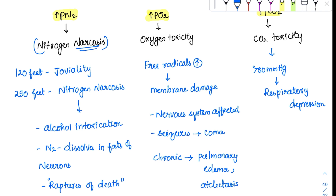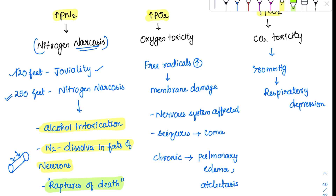In nitrogen narcosis, at 120 feet the person will have some aura or joviality. But when he goes to 250 feet, there will be severe narcosis — the person feels as if intoxicated by alcohol, and will ultimately die if he stays there longer. N2 dissolves in the fats of the neurons, altering myelin sheath conductance and the neuronal system. It is also called 'raptures of death.' Beyond that, for every 10 to 20 feet it is like taking one martini — hence it is also called the martini effect.